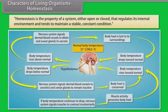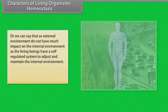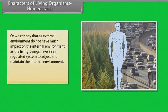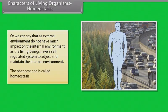Homeostasis is the property of a system, either open or closed, that regulates its internal environment and tends to maintain a stable, constant condition. In other words, the external environment does not have much impact on the internal environment, as living beings have a self-regulated system to adjust and maintain the internal environment. This phenomenon is called homeostasis.